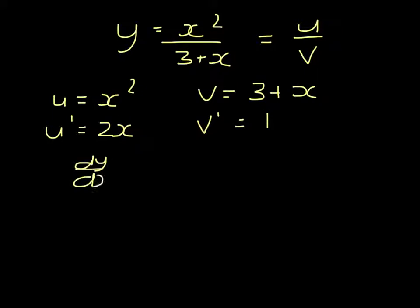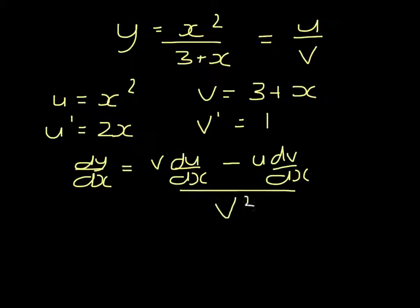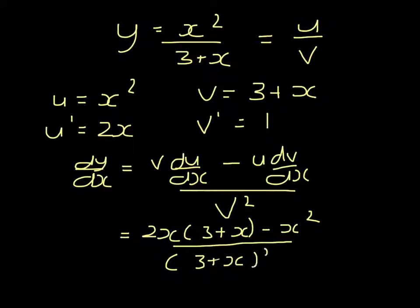Quotient rule states that the differential dy/dx is V du/dx minus U dv/dx all over V squared. Substituting in, that would be 2X upon 3 plus X minus X squared all over 3 plus X all squared.